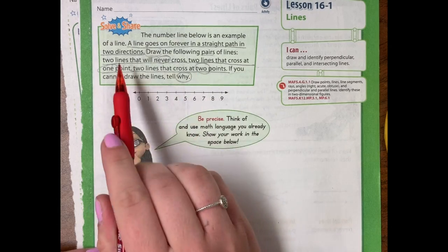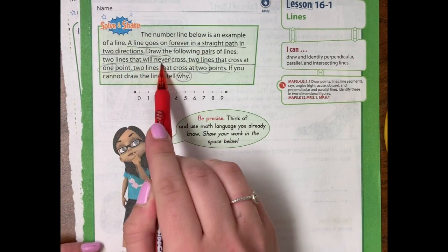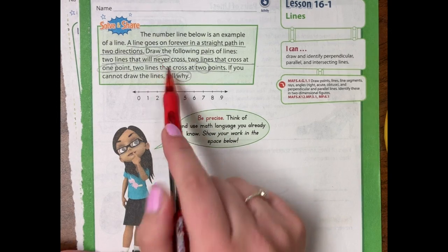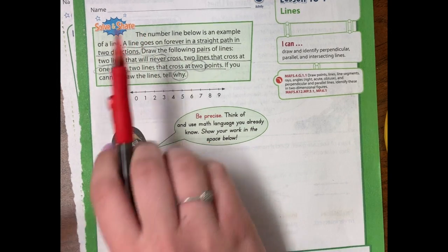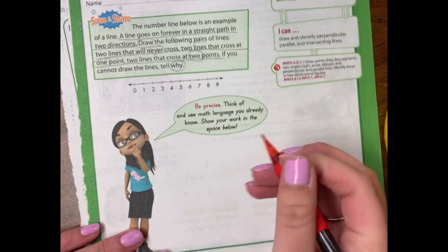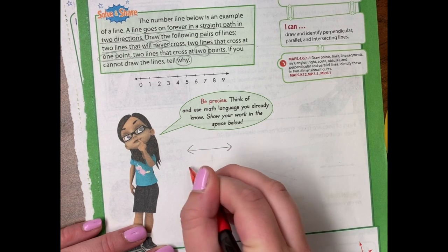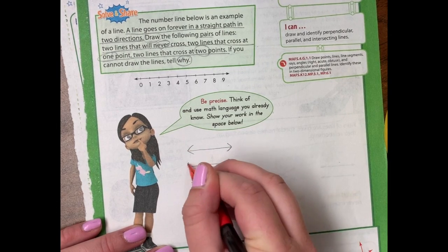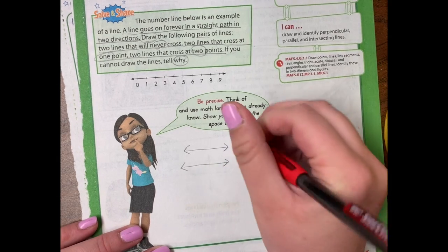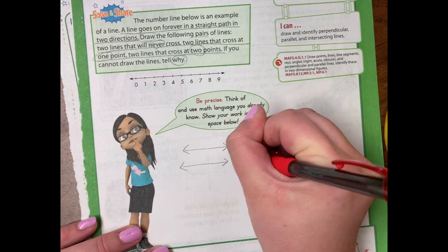The first thing that they want us to draw are two lines that never cross. You learned a word in third grade that meant two lines that are going to go on forever and ever and never cross. So I can just draw here's a line and here's a line. These two lines, two lines that never cross.